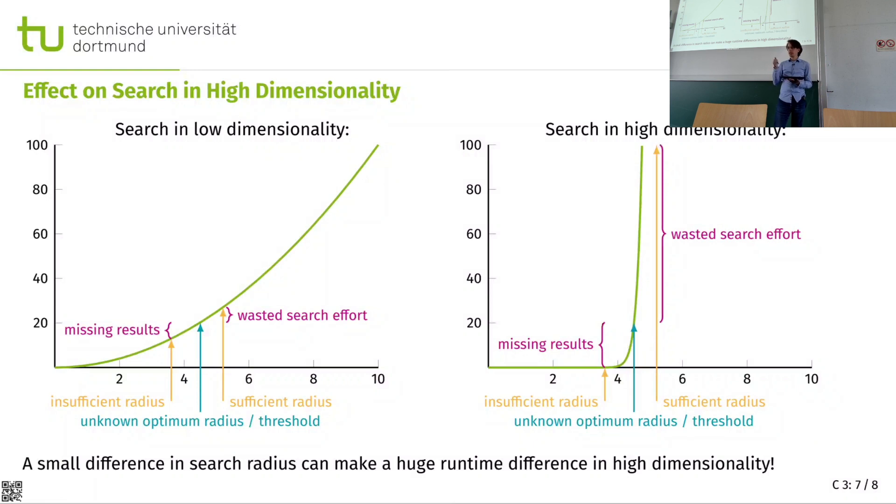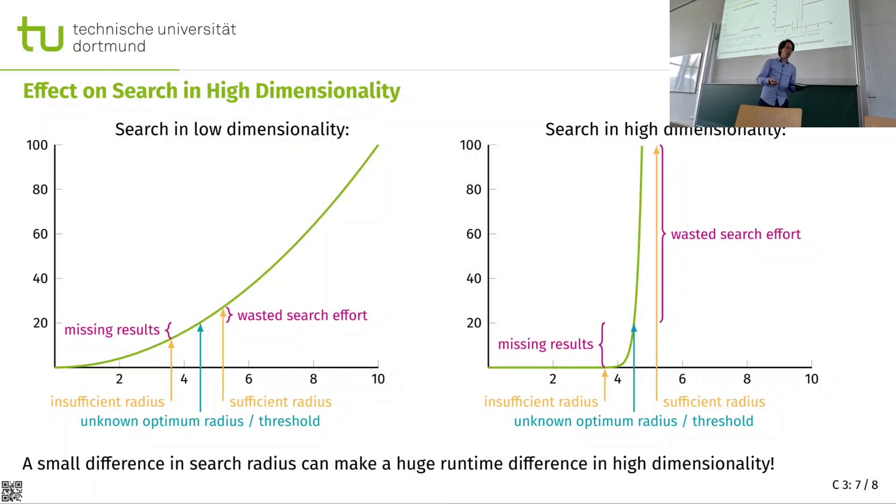And unfortunately, in high dimensional data, getting this radius right becomes hard. And pruning data, stopping early because I'm sure that I won't have further results, tends to happen later. So I have to collect more results to eventually get the correct answer. So search in high dimensional data is affected by this, even if my data is not random data that has the proven properties of Beyer's curse of dimensionality. Even if it's real data, multimodal coming from different distributions, with clusters and all of that, this effect is very real.